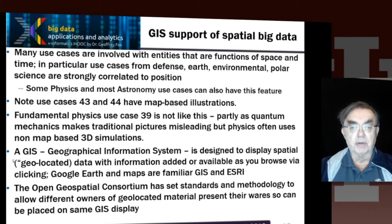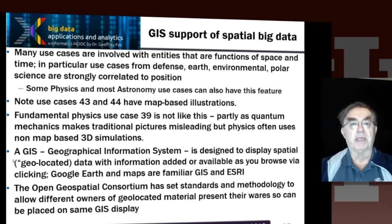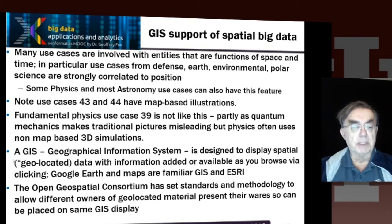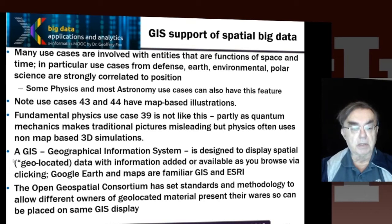Even when you're doing material science, you will have simulations which need to be visualized in three dimensions, but you wouldn't actually use a GIS. GIS is for the special type of three-dimensional applications where the view of a map is a useful way of thinking. Here we note the Open Geospatial Consortium, which is enabling these GISs to work well by setting standards and establishing methodologies.